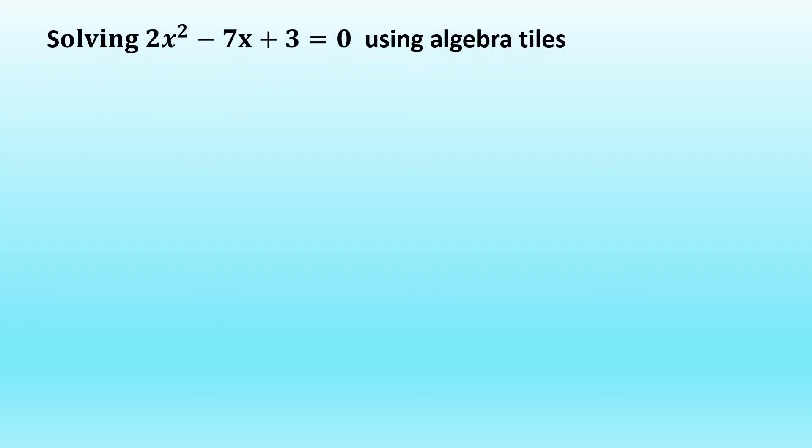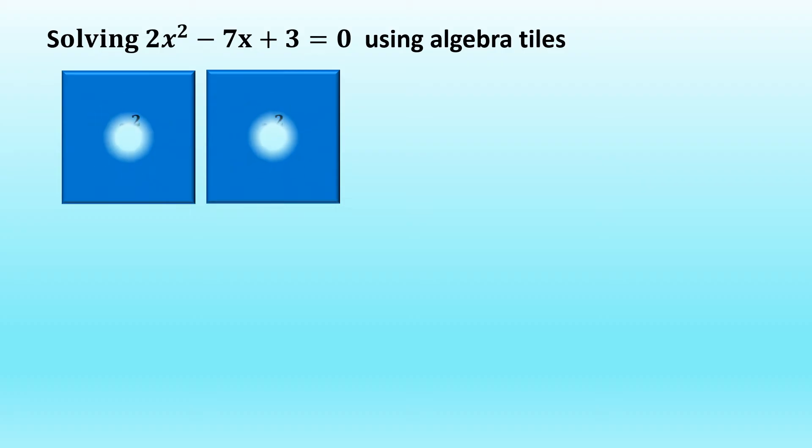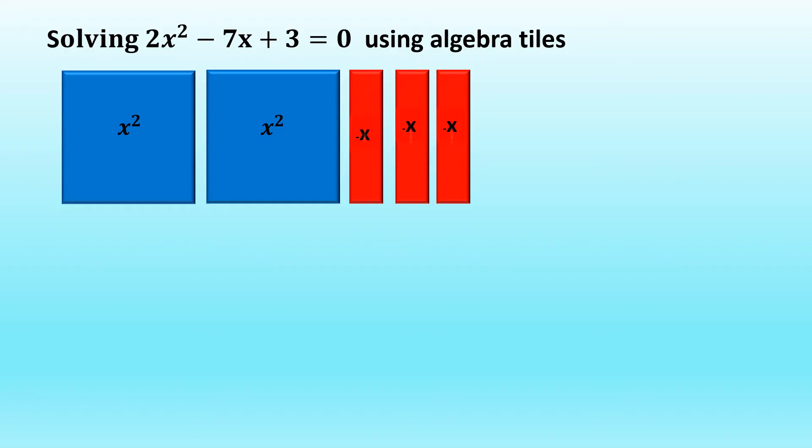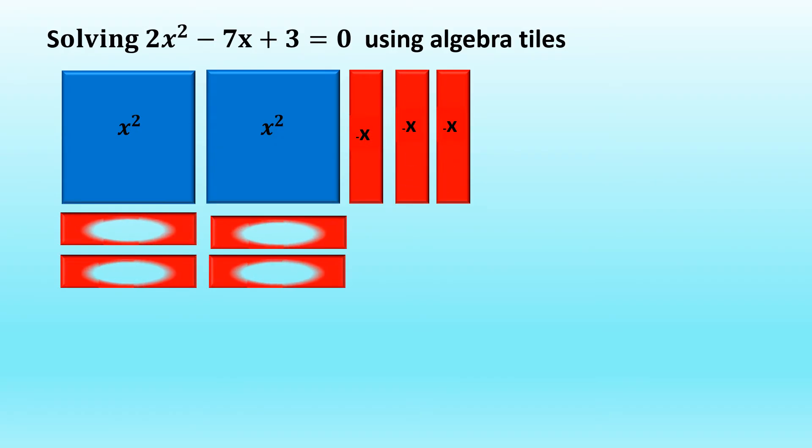Solving 2x squared minus 7x plus 3 equal to 0 using algebra tiles, we need to arrange the tiles. We have our 2 large blue tiles, we place 3 red tiles on the right of it and we place 4 red tiles below. So that's 7 red tiles all in all. And we have our 3 yellow tiles for the unit 3.